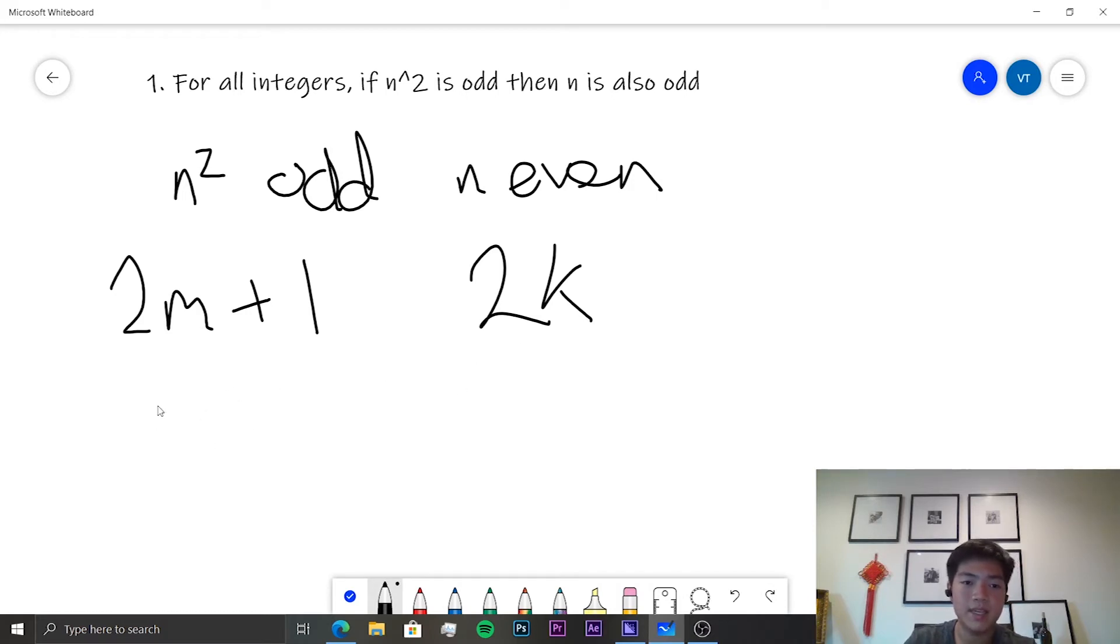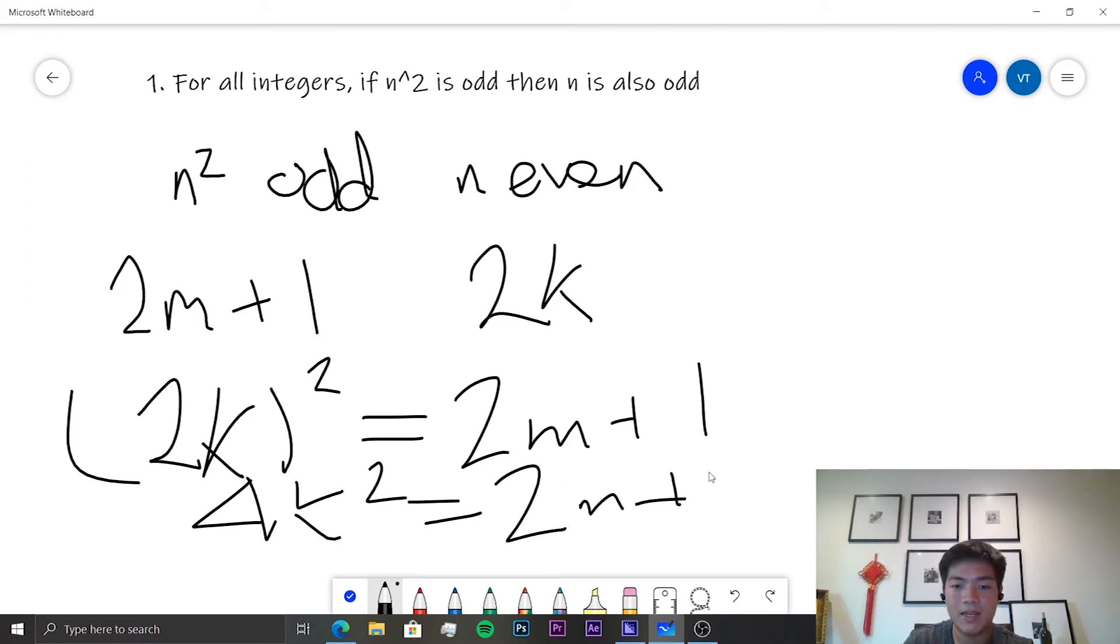So the thing is, what they're saying is 2k squared is equal to 2m plus 1. Otherwise, 4k squared is equal to 2m plus 1. And this is simply a contradiction. Because on this side, you have an even number, but on this side, you have an odd number. And so, therefore, if n squared is odd, n must always be odd as well.